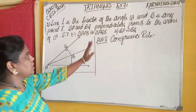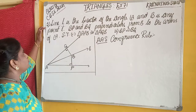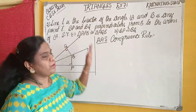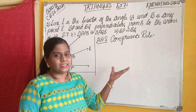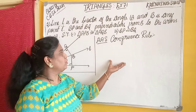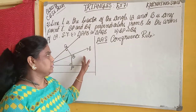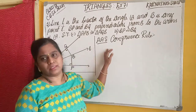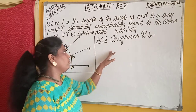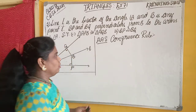In the triangles, Exercise 7.1 and the 5th problem. Before going to this problem, let us have some concept — some prior knowledge. To solve this, the AAS congruency rule is very important.